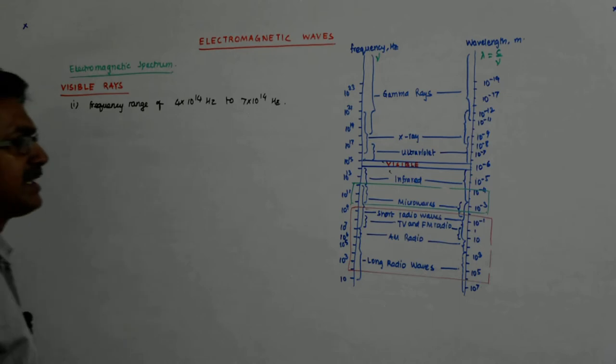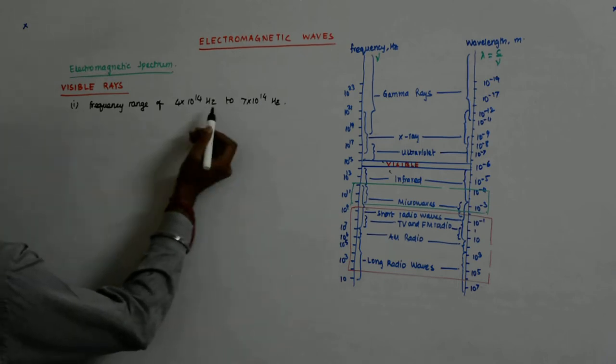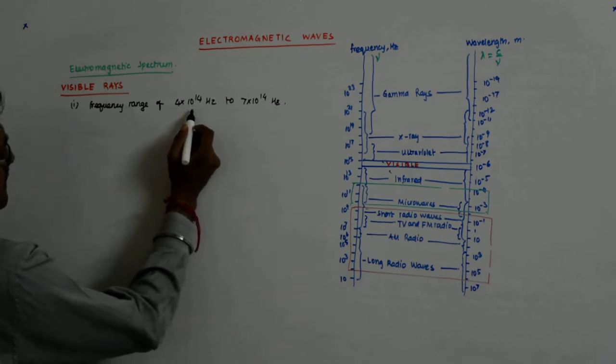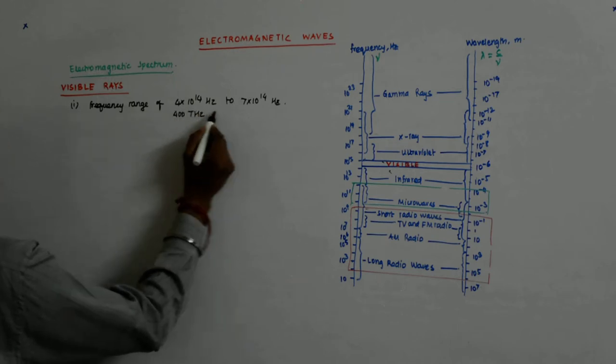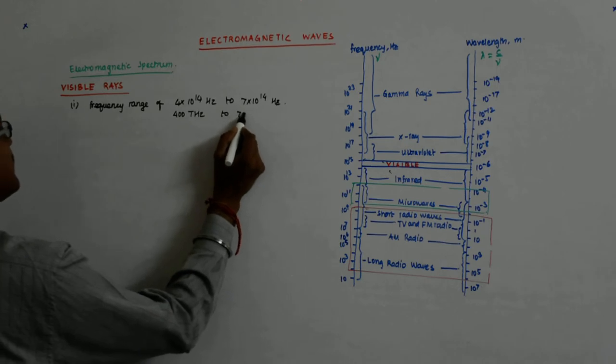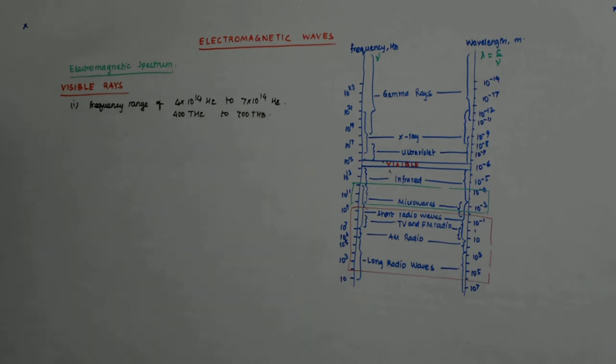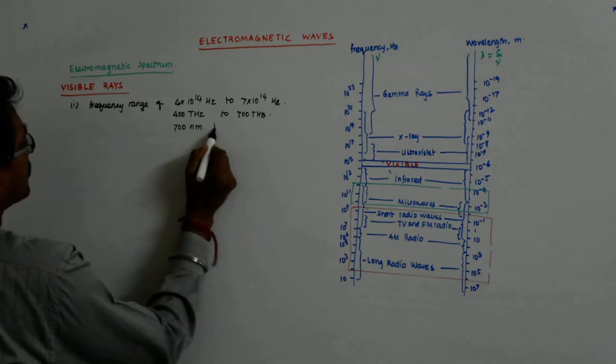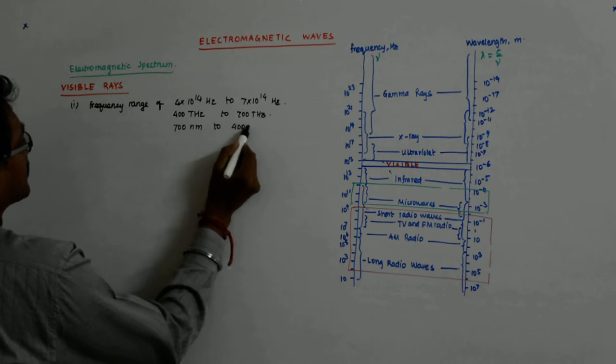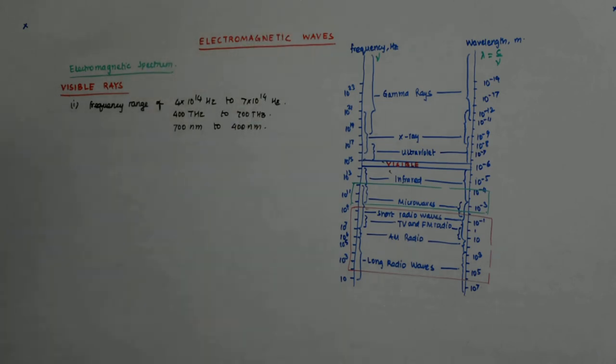Only that is visible to us. That is somewhere 400 terahertz to 700 terahertz. Wavelength-wise it is 700 nanometer to 400 nanometer. Obviously you understand that as your frequency is going up, your wavelength is going down.